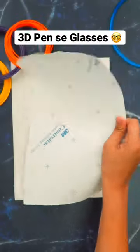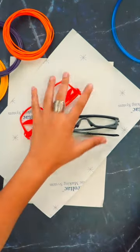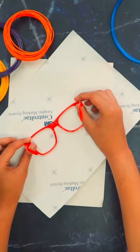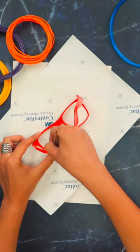What are you seeing? You look beautiful. This is a sheet. With the help of a 3D pen, you can make everything. So first of all, we will trace something like this.